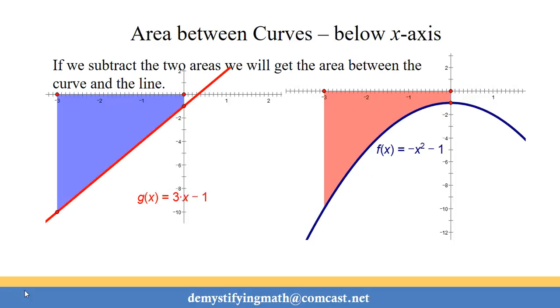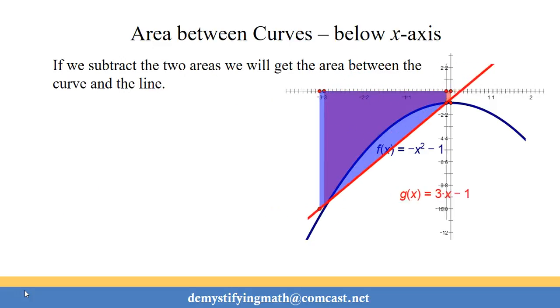So I'll do that one more time for you so you can see it a little bit better. So the area between the x-axis and the line is greater than the area between the x-axis and the curve. So we're going to subtract the two areas subtracting the upper graph area minus the lower graph.